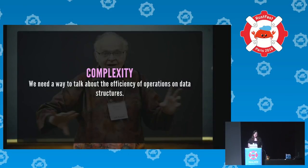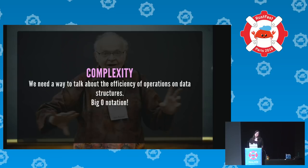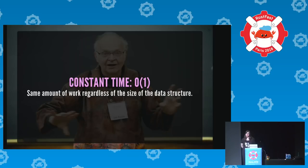We also need to talk about complexity — a vocabulary for discussing the efficiency of operations on data structures, like adding an element to the back of a list. I'm going to introduce Big O notation, but keep it to the basics. The simplest one is constant time operations, written as O(1). That means you need the same number of operations to perform it regardless of how large the data structure is.